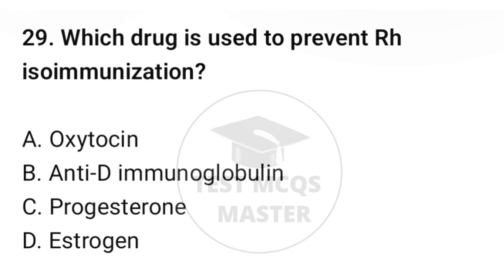Question number twenty-nine: which drug is used to prevent Rh isoimmunization? The correct option is B: Anti-D immunoglobulin.